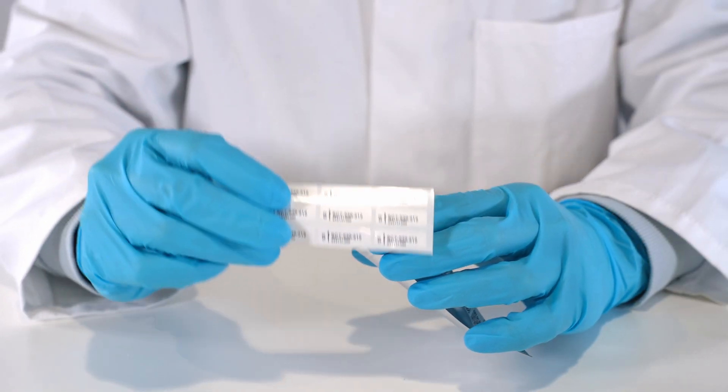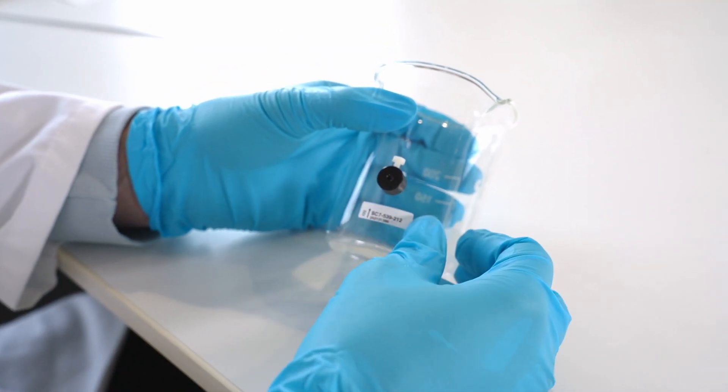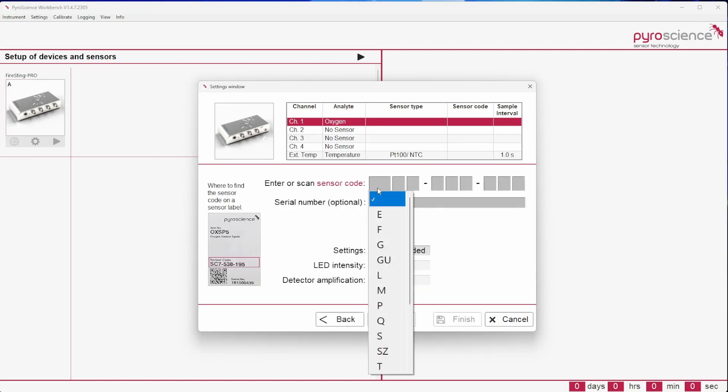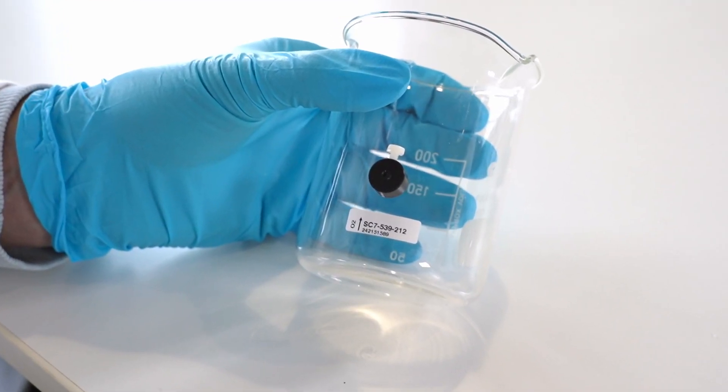Now glue one of the included stickers with the specific sensor code of the sensor spot at the outside of the sample container. This sensor code has to be entered into the respective channel of the software settings. The sticker also supports the subsequent assignment of the respective sensor.